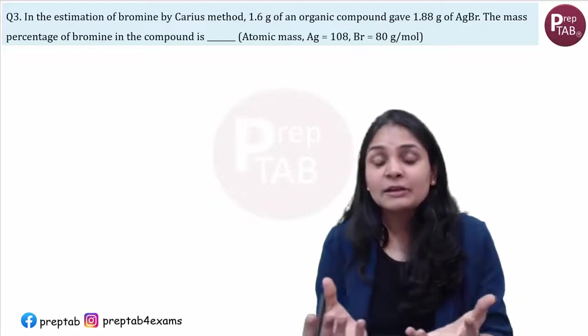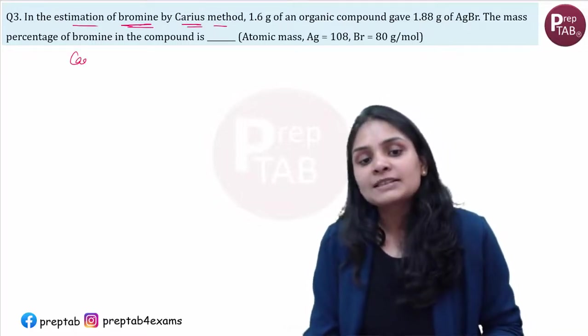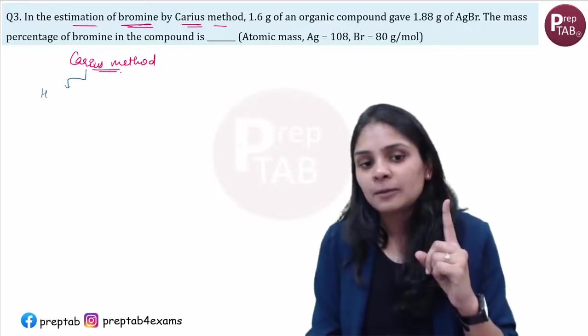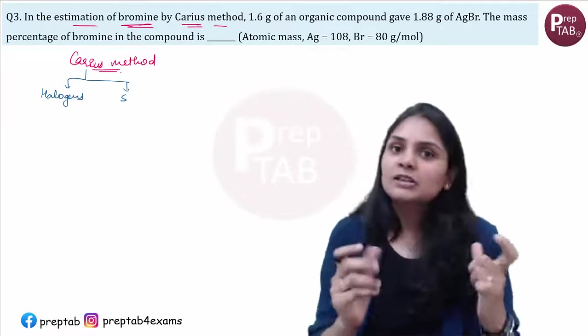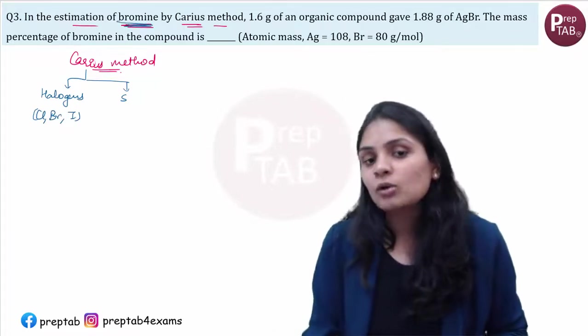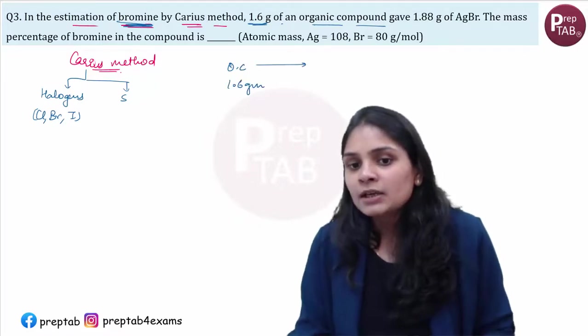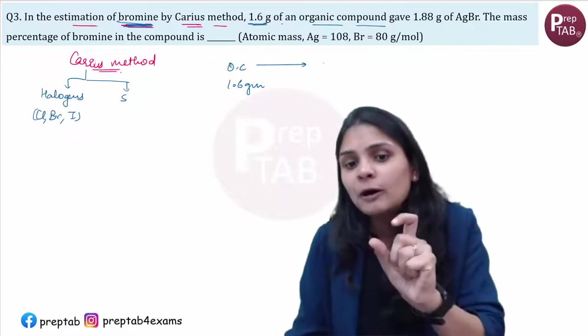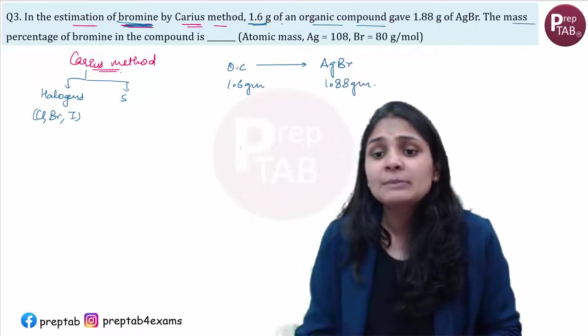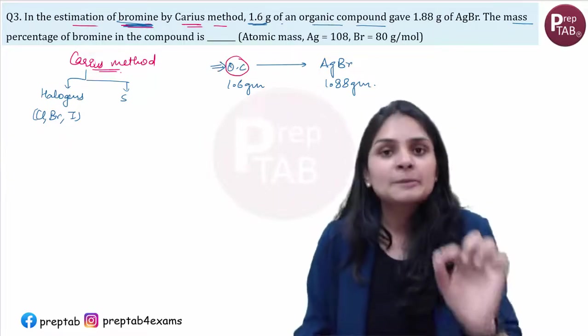Next question. Now this is a numerical question. In POC numerical type questions, have a look at this. In the estimation of bromine by Carius method, Carius method is quantitative analysis which uses two atoms, one halogen, another sulfur. In halogen, chlorine, bromine, and iodine we estimate. 1.6 gram organic compound, this compound we converted into AgBr, then AgBr 1.88 gram. Mass percentage of this compound, bromine is very simple, how much bromine was here.